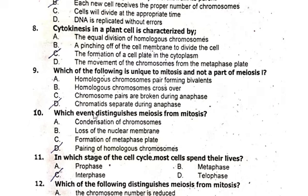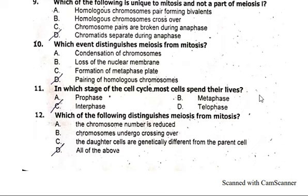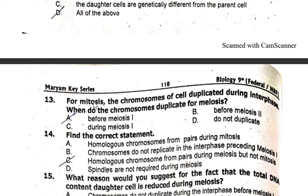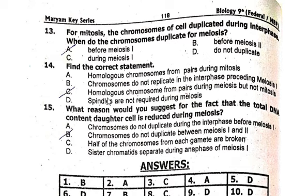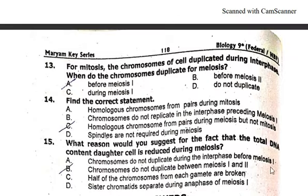The process of mitosis ensures that each new cell receives the proper number of chromosomes. Cytokinesis in a plant cell is characterized by the formation of a cell plate in the cytoplasm. Which of the following is unique to mitosis and not a part of meiosis? Chromatids separate during anaphase. Which event distinguishes meiosis from mitosis? The pairing of homologous chromosomes. In which stage of the cell cycle do most cells spend their life? That is interphase.